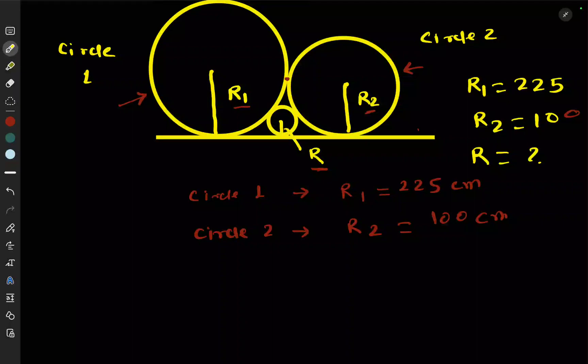Hi everyone. We have a problem with two circles touching each other externally. Circle 1 is here, Circle 2 is here, with radii R1 and R2. They are touching each other externally at a point.